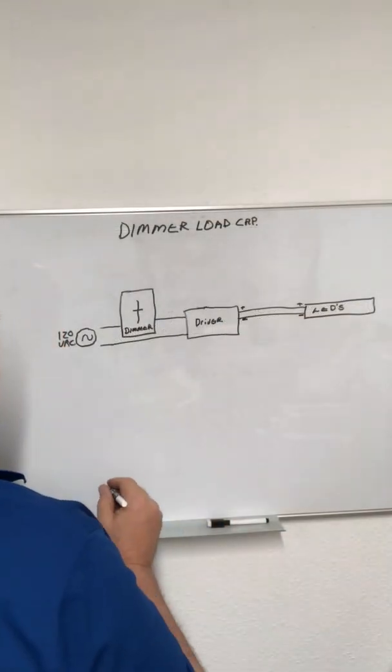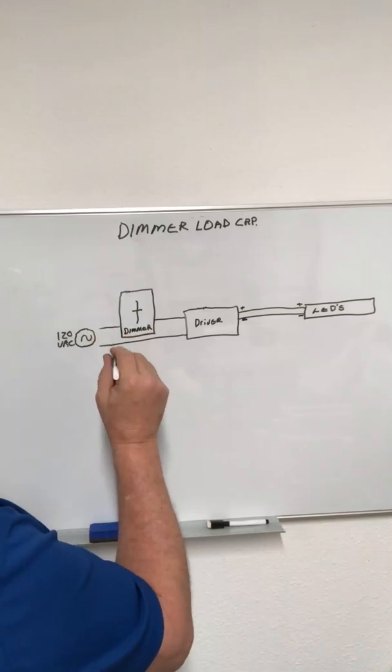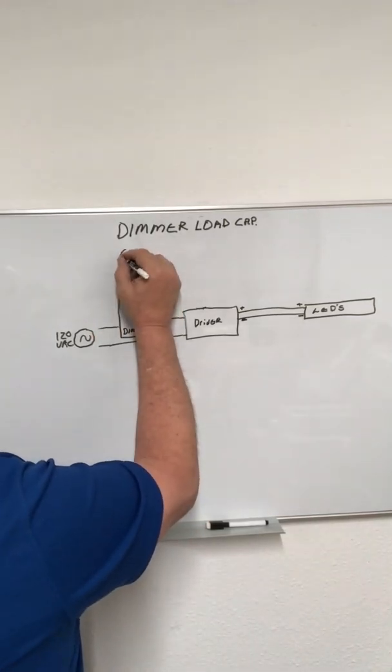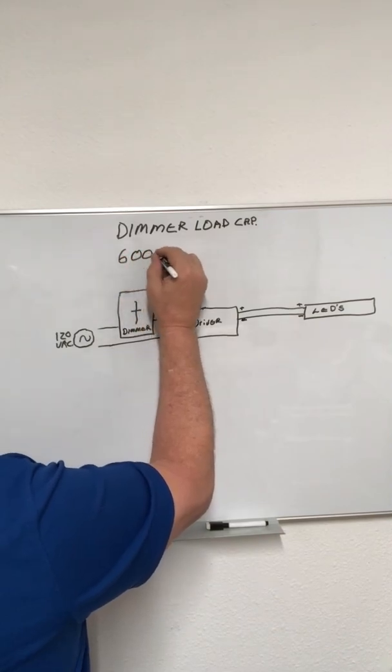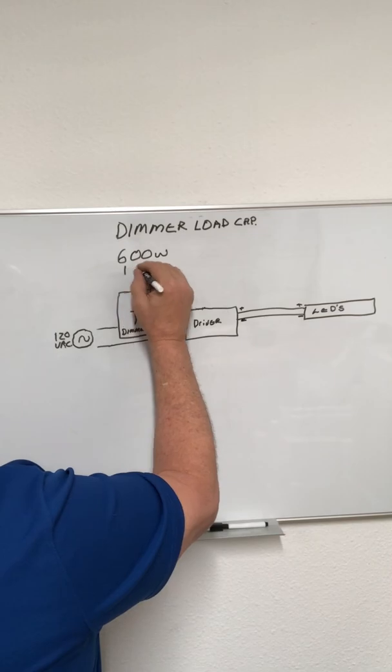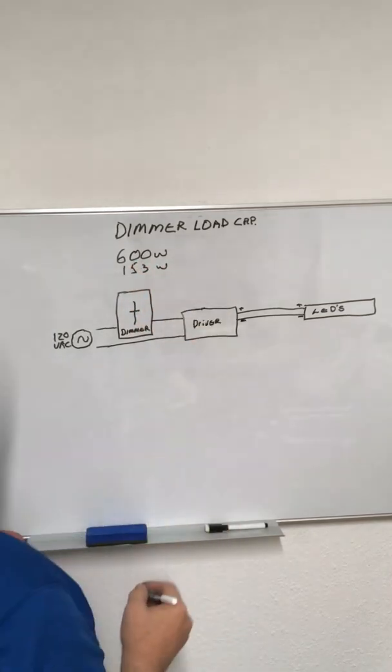If you look at your LED's instructions, you'll see that they may be rated. A lot of times, the standard is usually 600 watts, or 153 watts with CL dimmers.